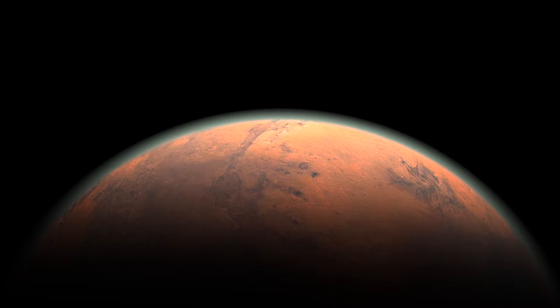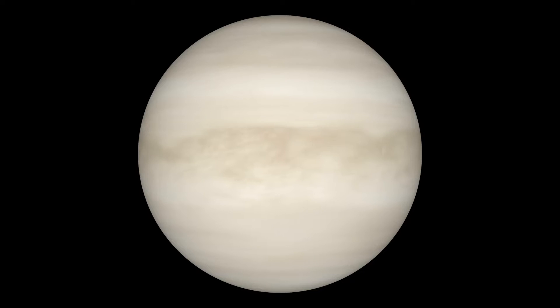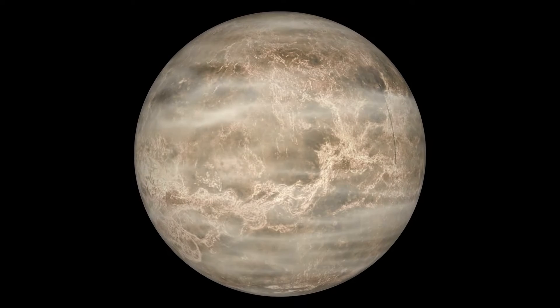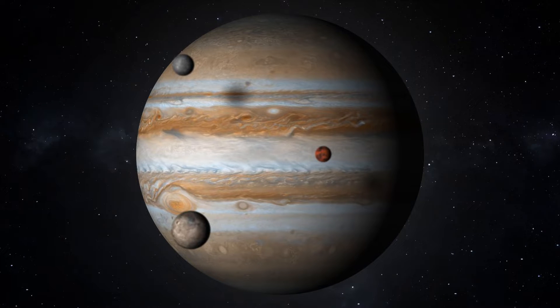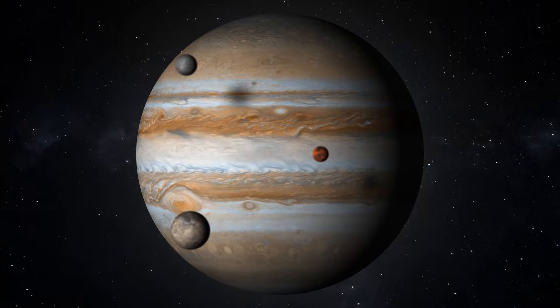This is part three of a series about the real possibility of life elsewhere in our solar system. In this video, I'll be giving an overview of the two planets and three ice moons we'll be looking at in more detail in later videos.